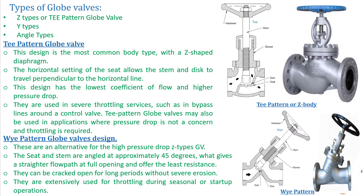Now let's see the different types of globe valves. There are basically three types used in industry: the first is the Z-type or T-pattern globe valve, the second is the Y-type, and the third is the angle type. I have arranged pictures here so you can easily visualize what each type looks like.